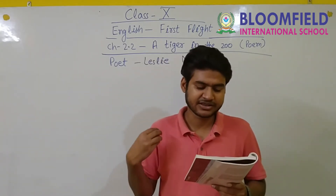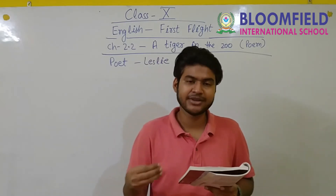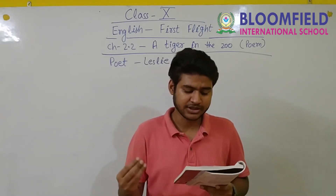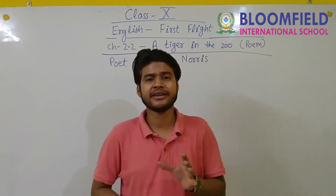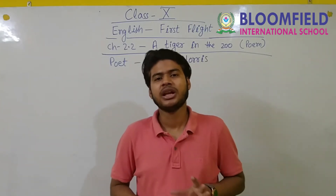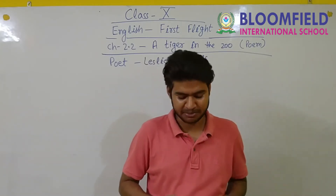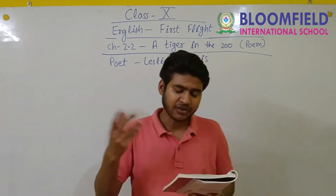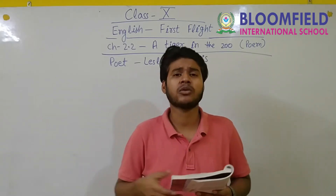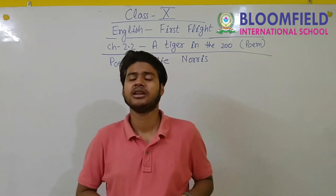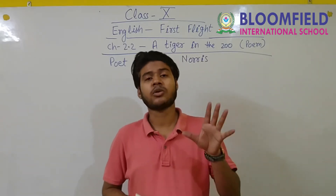He stalks in his velvet stripes, the few steps of his cage on pads of velvet quiet, in his quiet rage. Here the stripe means the line of the pattern on the tiger's body. He is looking beautiful in his golden-black stripes which you can easily find on the tiger's body. The few steps of his cage - although he is kept in a cage. The pads means the claws of the tiger, which are very soft as if they are made of velvet.